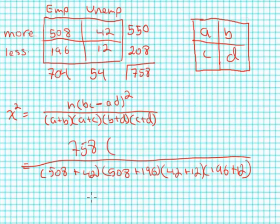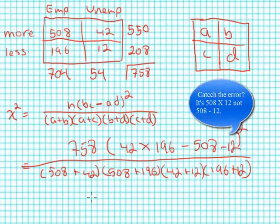758 times 42 times 196 minus 508 minus 12, and that quantity squared, and that's going to be equal to 0.79, a very low chi-square.